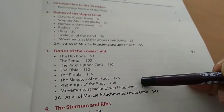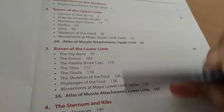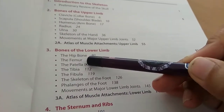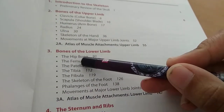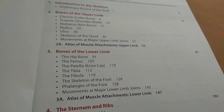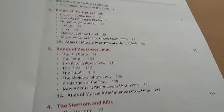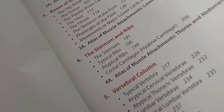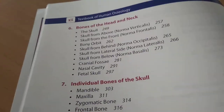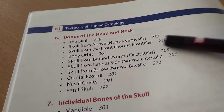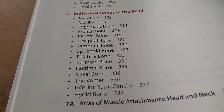For the lower limb, you have hip bone, femur, patella - which is a special bone - tibia, fibula. Then sternum, ribs, vertebral column, and head and neck bones - bones of the skull.